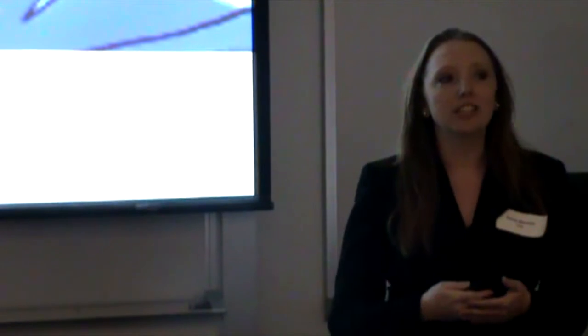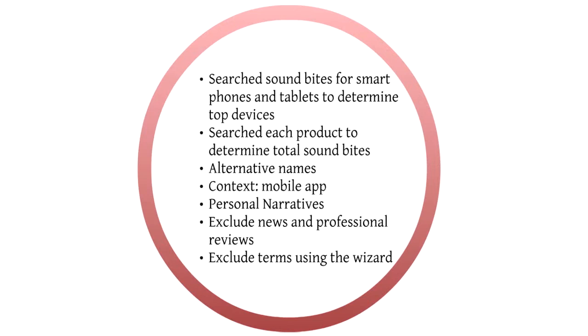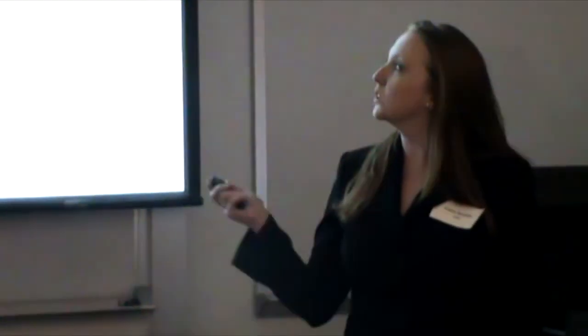A lot of us offhand probably would have said Android would have been on there, and we all had our preconceived notions of what those devices would be. But we needed to use NetBase to see what was being talked about. So what we did was search soundbites for tablets and smartphones. We started topics within NetBase for tablets and looked at all the tablets generating buzz, then looked at smartphones and all those generating buzz, and compiled a list to pick the top five. We searched each product separately to get the true amount of buzz, using alternative names — so for the iPhone, people may have said iPhone 4, iPhone 4S, but they were still talking about the iPhone, so we needed to include those in the alternative names.